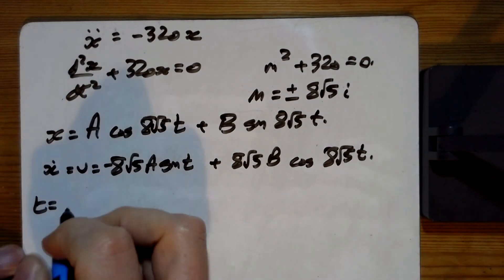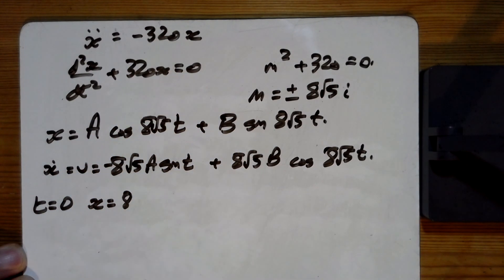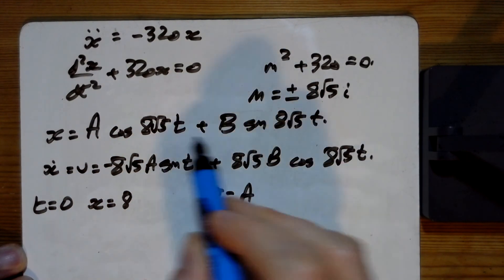that when t = 0, x = 8. So 8 = A, and the rest